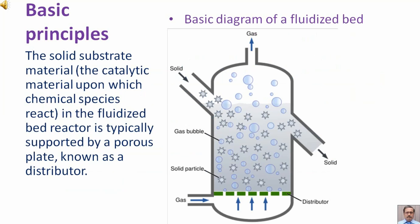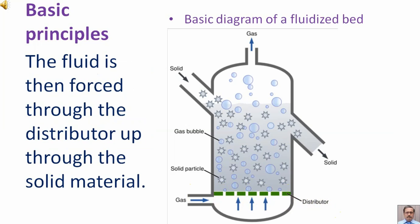Regarding basic principles: the solid substrate material — that is, the catalytic material upon which chemical species react — in the fluidized bed reactor is typically supported by a porous plate known as a distributor. The fluid is then forced through the distributor and up through the solid material.